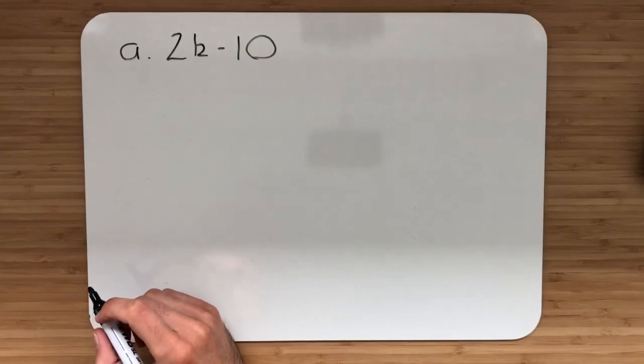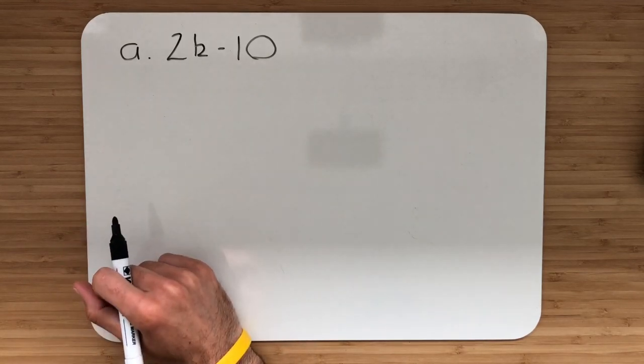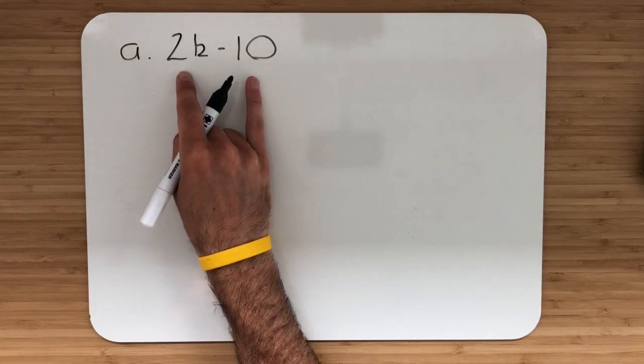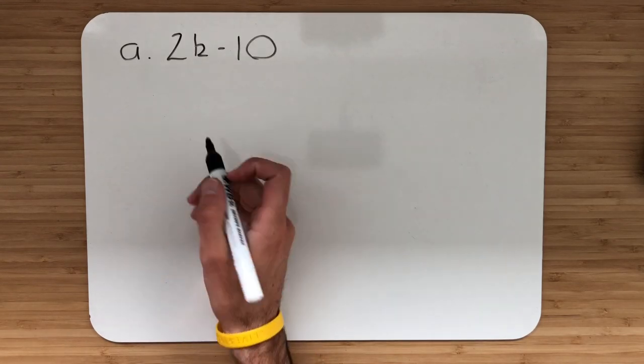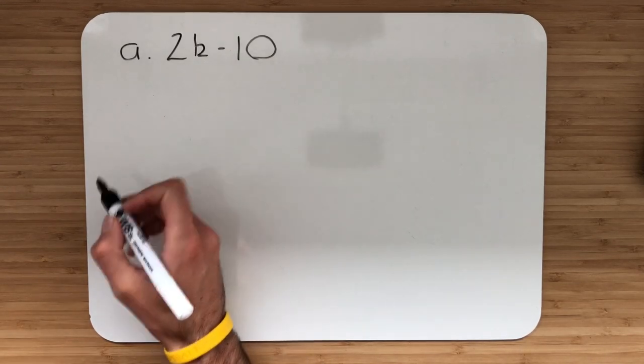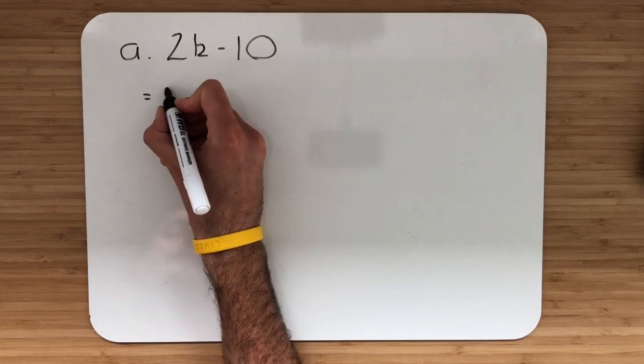In example 1, part A, we're looking to factorise 2k subtract 10. We need to look for the highest common factor between the 2k and the number 10. The number that goes into 2 that also goes into 10 is the number 2. So we call that our highest common factor.